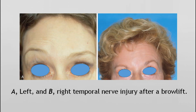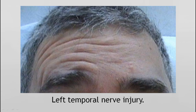These photos show the effect of temporal branch injury after a brow lift. You can see loss of function of the frontalis muscle and denervation of the eyebrow, so the eyebrow is not elevated on the affected side. Eventually the forehead wrinkles disappear and the forehead appears smooth. This photo also shows injury of the temporal nerve on the left side, with failure of elevation of the eyebrow and disappearance of wrinkles on the affected side.